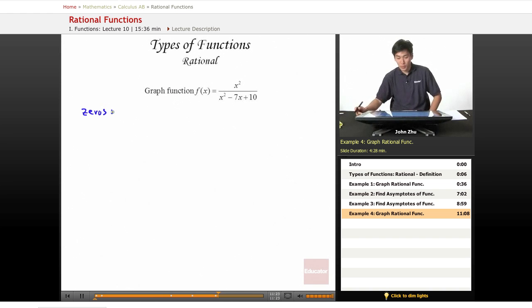Well, we should probably simplify this first. So let's do x squared remains on top and just factor this thing out. So x plus 2, x minus 5.